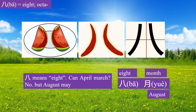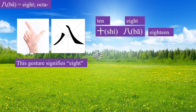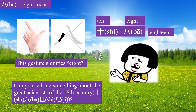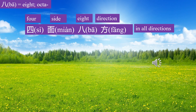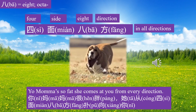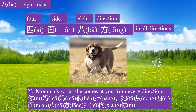Character 八 means eight. This gesture signifies eight. 十八 is 18. Can you tell me something about the great scientists of the 18th century? 十八世纪 — they are all dead. 他们都死了. 四面八方 means in all directions. Your mom is so fat she comes at you from every direction — 他从四面八方扑向你.